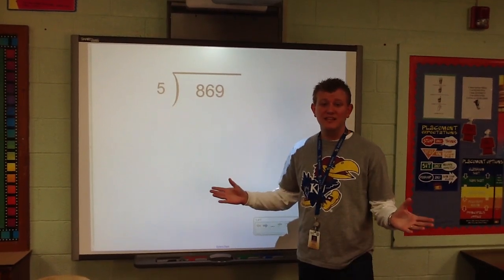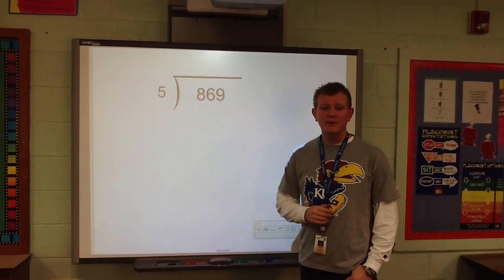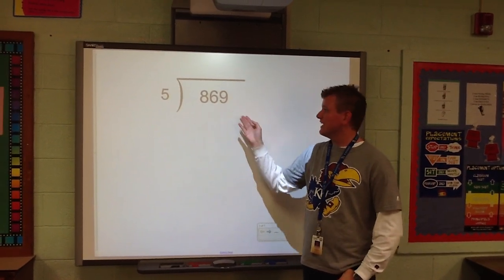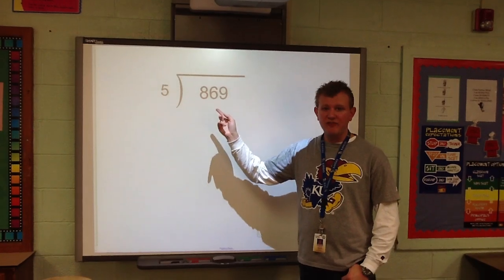Okay, welcome back to Mr. Quick's flipped class. Today we're going to continue talking about long division. Now, I have a problem set up on the board for you. It's 869 divided by 5.